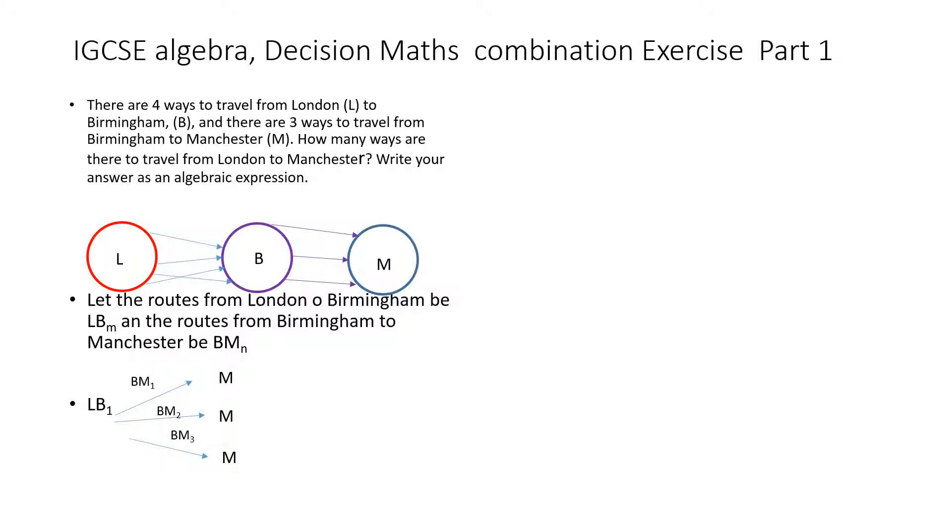I can do the same for LB2. For each of the routes from London - LB1, LB2, LB3, LB4 - there are three more ways to Manchester. So the number of ways to go from London to Manchester is: